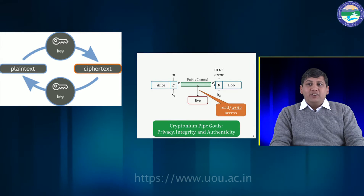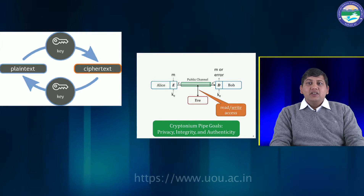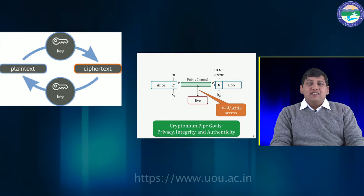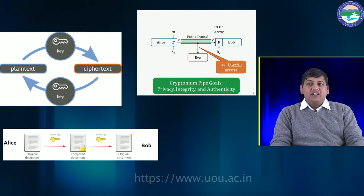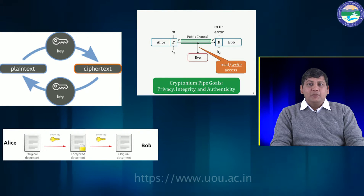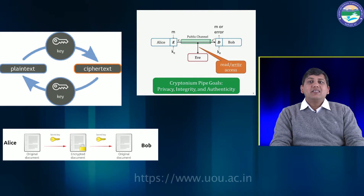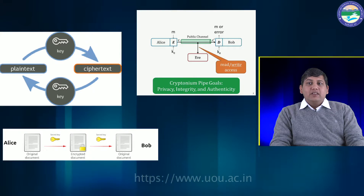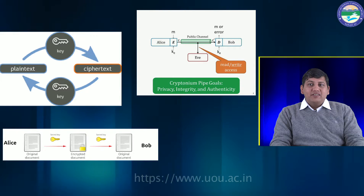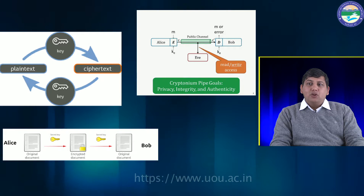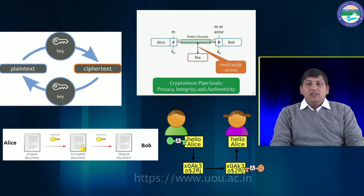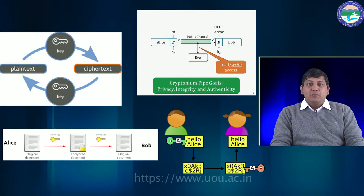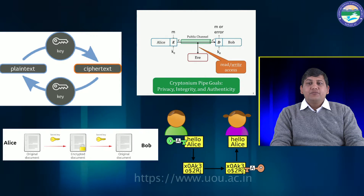But Eve may tamper it, in that case C will not be equal to C dash. Once the ciphertext is received, Bob decrypts the ciphertext with the decryption program using the decryption key KD. The outcome may be the original message sent by Alice or an error. An error is very important to decide whether the message has been tampered, in which case C is not equal to C dash.